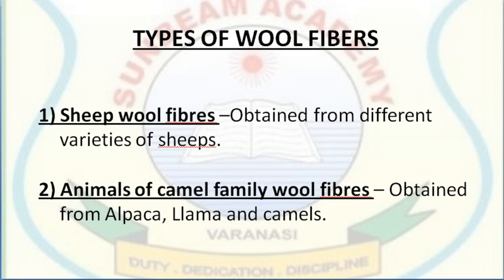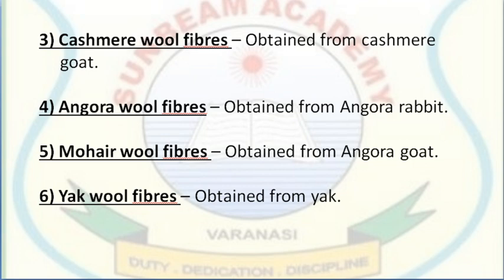The second type of wool fiber comes from animals of the camel family — alpaca, llama and camels — whose hair is also used to make wool yarns. The next is Kashmiri wool fiber, which is extremely soft, resilient and easy to dye. It is a rare and expensive fiber, combed once a year from the bellies of Kashmiri goats found only in the mountains of China and Tibet.